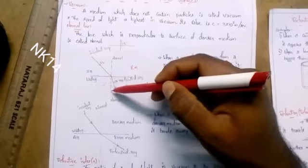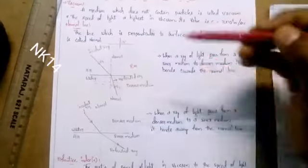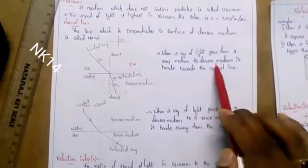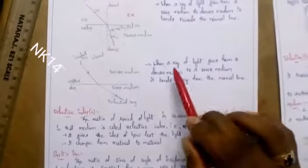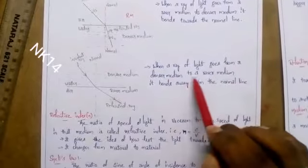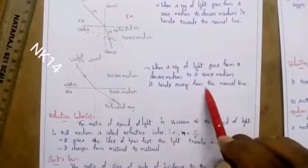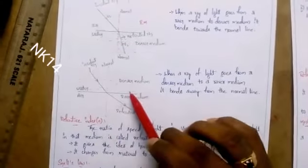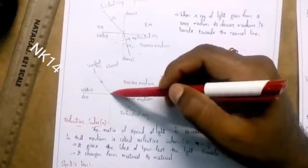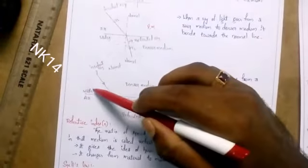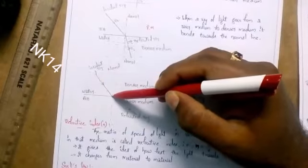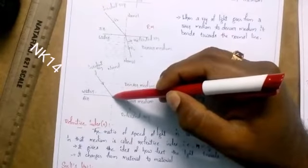This bending toward the normal happens when light travels from a rarer medium to a denser medium. The opposite case is when a light ray goes from a denser medium to a rarer medium — it bends away from the normal. In this case, the light travels from water to air.